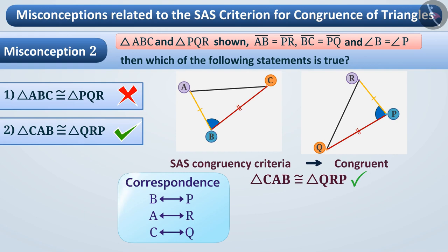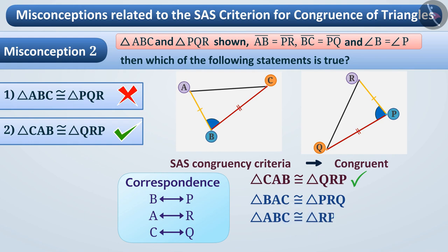Keeping in mind the correspondence, we can also express the congruency as: triangle BAC is congruent to triangle PRQ, triangle ABC is congruent to triangle RPQ, or triangle BCA is congruent to triangle PQR — or any other equivalent way.